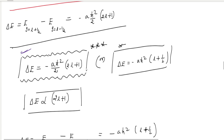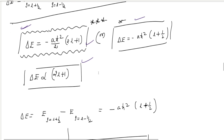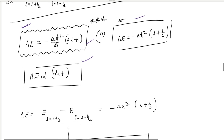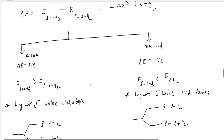Remember this important equation for ΔE. Now, using this equation, the energy levels are split. The possibilities for ΔE can be positive or negative. In the atomic case, higher j values lie above in the energy level arrangement. But when it comes to the nucleus, the situation is different.